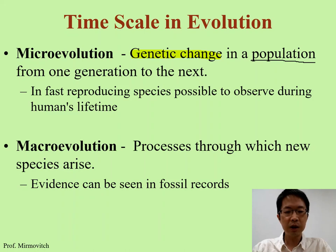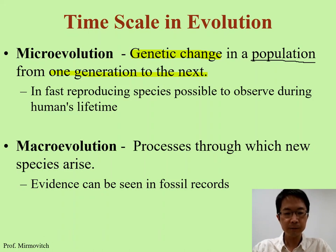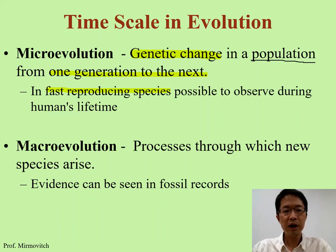Microevolution has a lot to do with the genetic changes that we observe in the population, and the genetic changes must be able to pass down from generation to the next generation — it is inheritable. Fast reproducing species, for example bacteria and insects, are very fast in terms of reproduction, so we can observe the changes from generation to generation. Whereas human beings, it takes many years to see evolution changes because human lifespan is relatively longer than insects and bacteria.